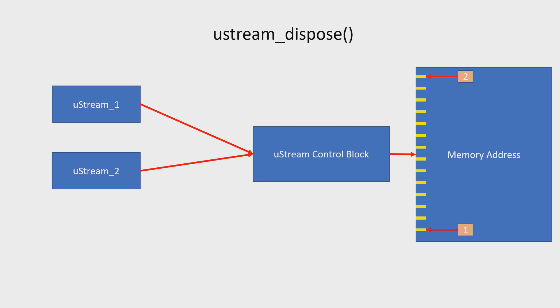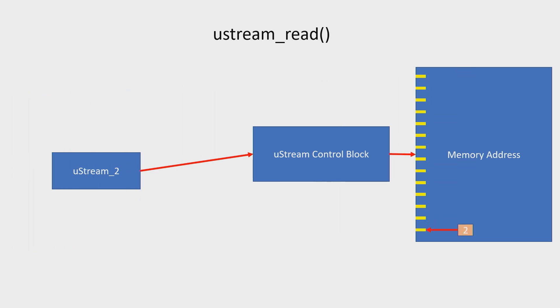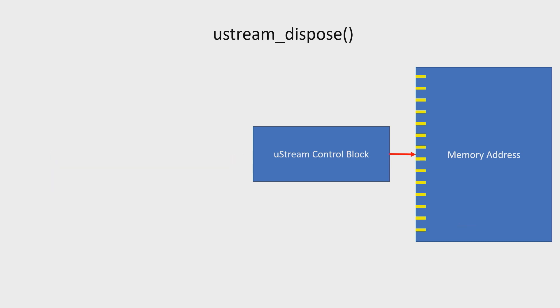When you're done, you dispose of your instance, which decrements the ref count. The other Ustream can then read the full data and also dispose when finished. Because there are no more references, the control block is automatically freed, and if the memory was malloc'd it's freed too — so there are no memory leaks. Importantly, there are no mallocs under the covers; everything is statically allocated. All memory used is passed by the user, which is great for embedded systems because it's deterministic.